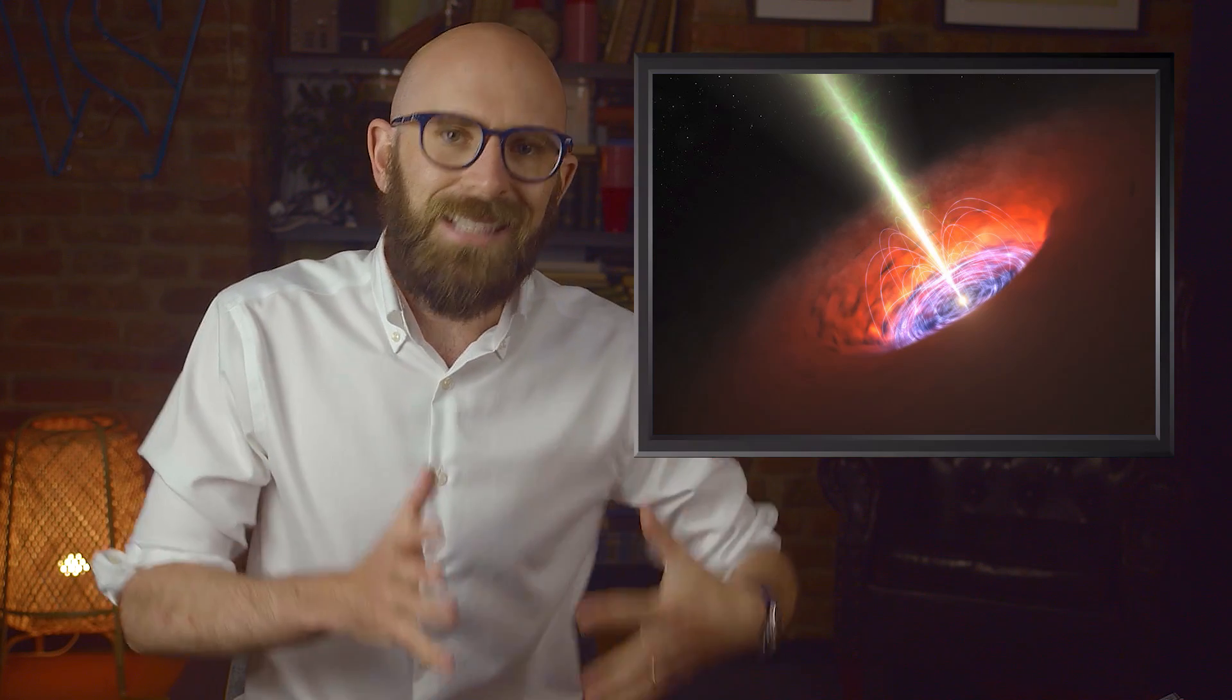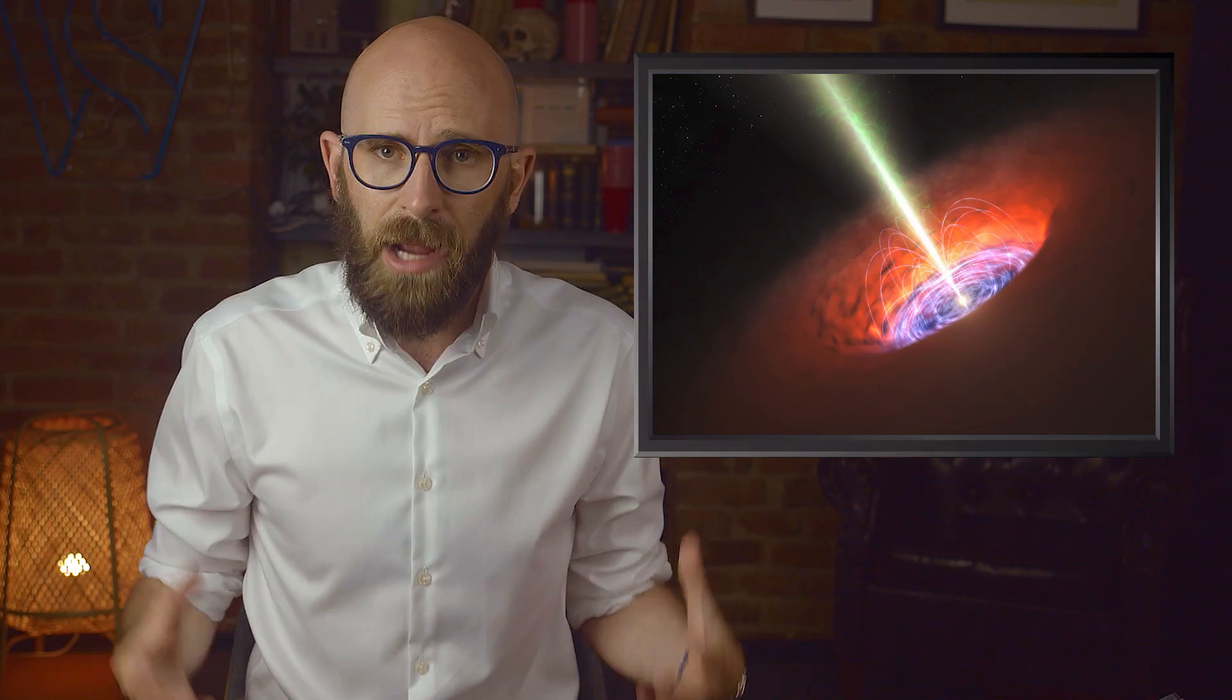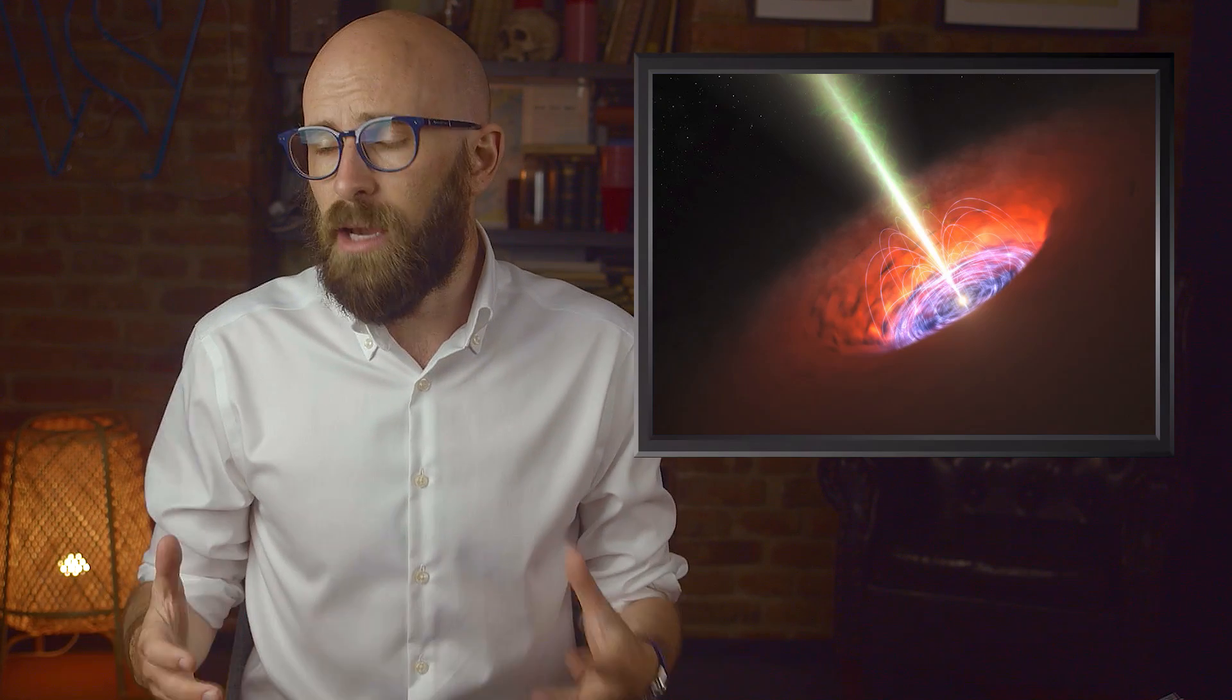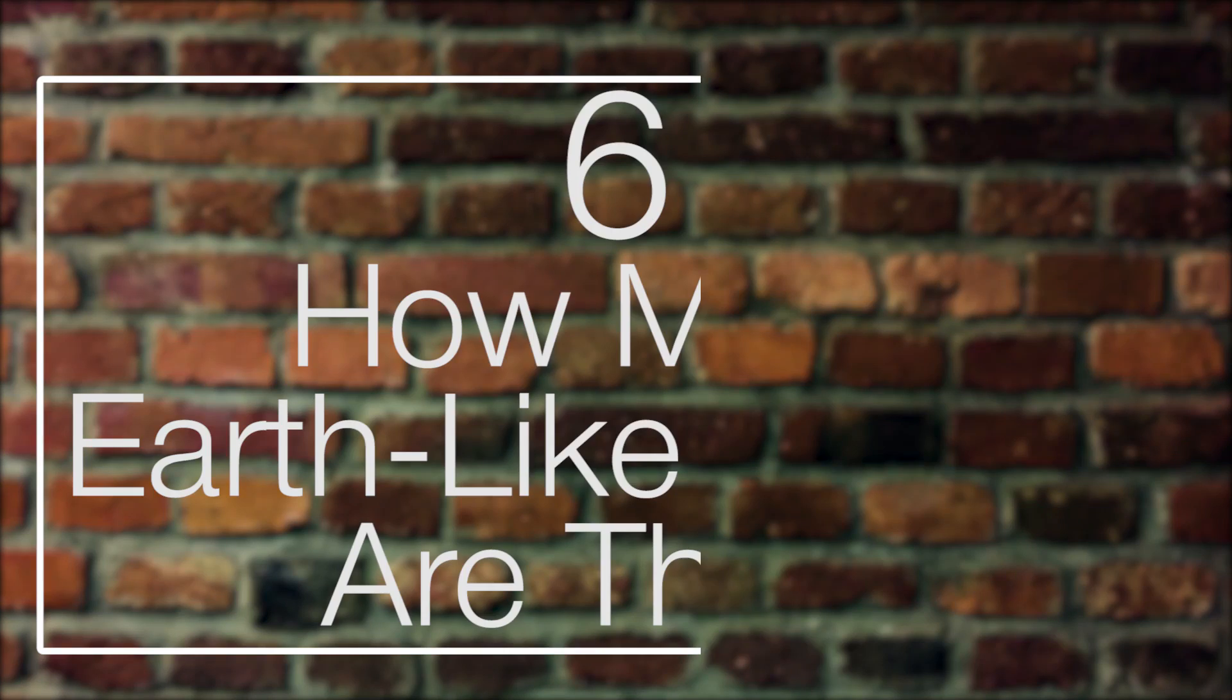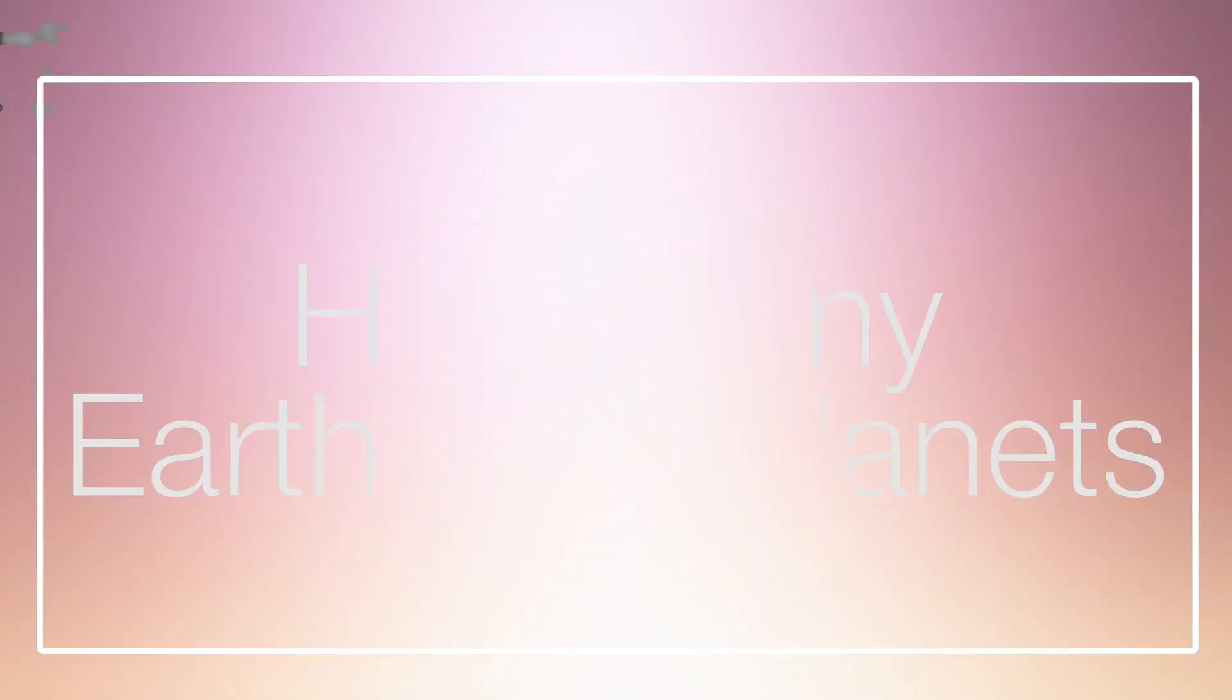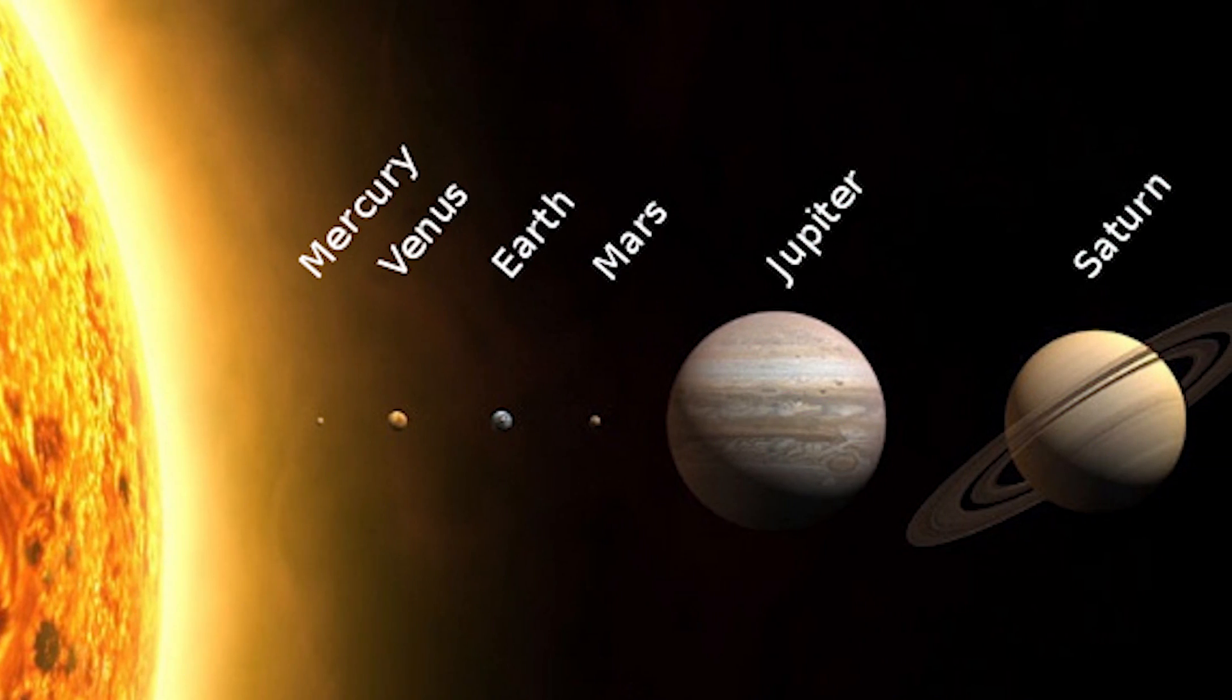The problem with supermassive black holes is that their mass is too big based on the age of the universe and what we know about how black holes form and grow. These supermassive ones just don't make sense. They shouldn't have gotten as big as they are. Maybe they formed along with the creation of the universe, or maybe they eat other gigantic black holes.